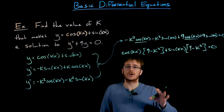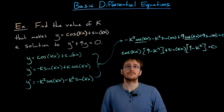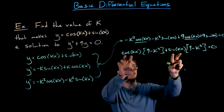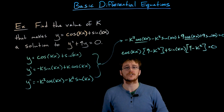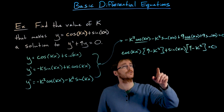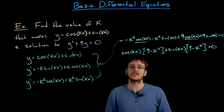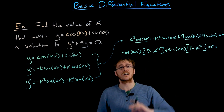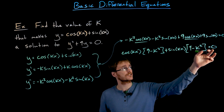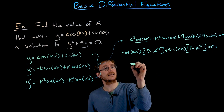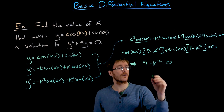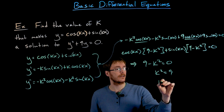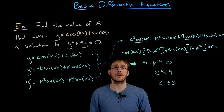We need this to equal zero no matter what value x takes. Cosine of kx and sine of kx are not always going to be zero — those quantities will be changing. But if we choose the right values for k, we can guarantee that these other factors will be zero, eliminating sine and cosine altogether. Our differential equation equals zero if and only if the quantity nine minus k squared equals zero. Solving that little quadratic equation, we find k is equal to plus or minus three.